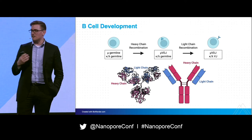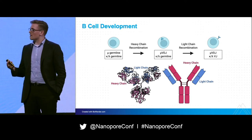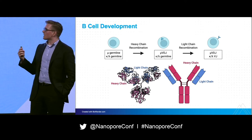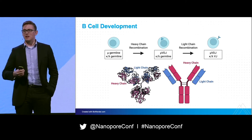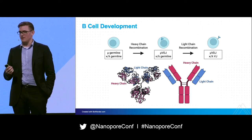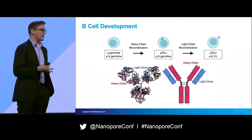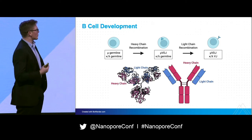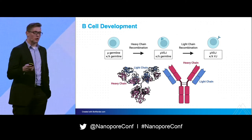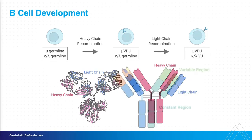Every cell in your body has the germline loci for this. One B-cell makes only one antibody, so it has to do actual recombination at the DNA level to produce that potential diversity. It does it one step at a time. We see the muVDJ recombination — that's the heavy chain recombination first — and then the light chain recombination after that, in two distinct steps. By the time you get to a final B-cell, you have a full DNA recombination and are able to produce the antibody.